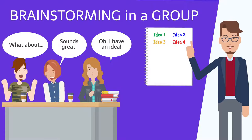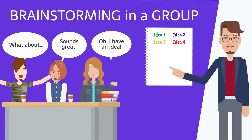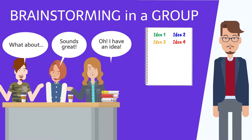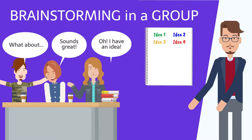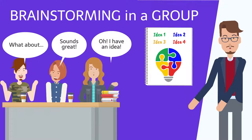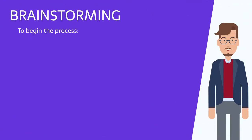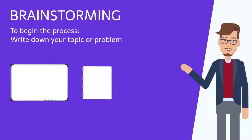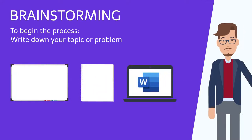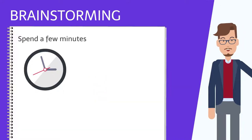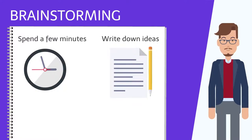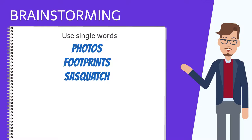Many novice writers worry that once they put something on paper it can't ever be changed — that's not true. In actuality, you want to use all the ideas to help shape and form your work. To begin the process in a more formal manner for your paper, project, or speech, write down your topic or problem at the top of your whiteboard, piece of paper, or word doc. Then spend a few minutes writing down every idea you have that's connected to your topic, using single words or short phrases.